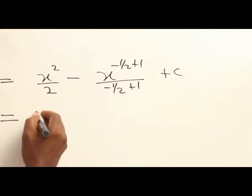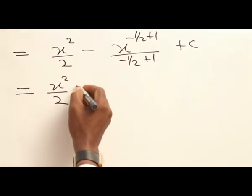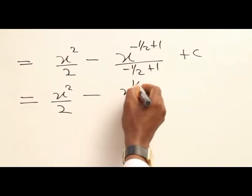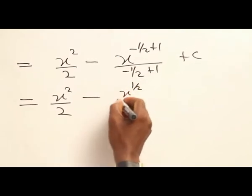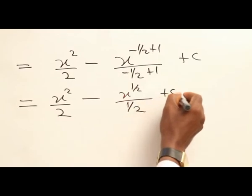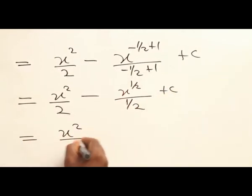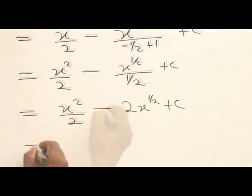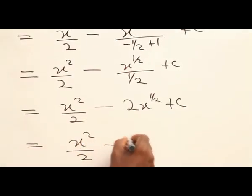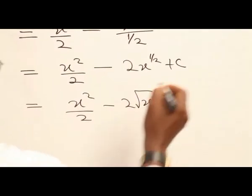This will give you s squared over 2, and of course minus s to the power half, all over half, plus c. That becomes s squared over 2 — you can write this as s squared over 2 minus 2 square root of s plus c.